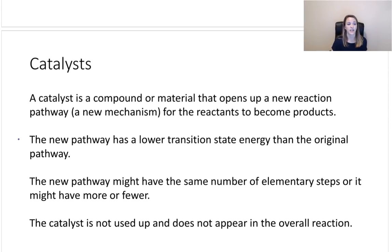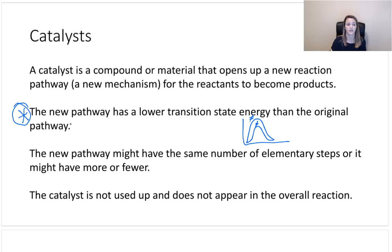The new pathway actually has a lower transition state energy than the original pathway. So remember before when we were looking at these Arrhenius plots, your transition state for a non-catalyzed or an uncatalyzed reaction, your catalyzed reaction is going to be lower than that. That's what's showing a lower transition state. Now the new pathway can have the same number of elementary steps, it can have more, it can have fewer steps. Overall though, it gets from point A to point B faster. Now here's the thing that we talked about in the last episode: the catalyst is not used up and it does not appear in the overall reaction. It is something that is added as a reactant first, and then the reaction proceeds, and then it's regenerated at the very end.